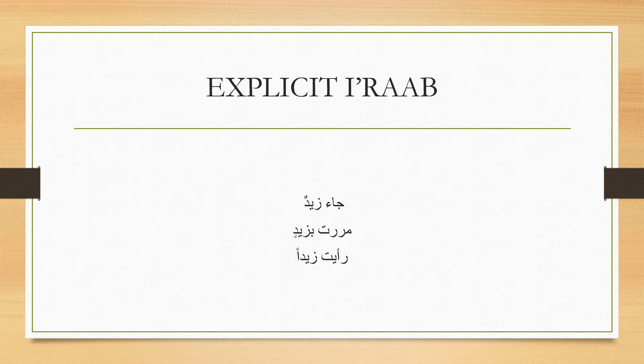In جاء زيدٌ, زيد is a فاعل and the فاعل is مرفوع, the sign of رفع being the ضمّة. In مررت بزيدٍ, زيد is an اسم مجرور due to the حرف جر, the primary sign being the كسر. In رأيت زيدًا, زيد is a مفعول به from the منصوبات, the primary sign being the فتح. This is an example of explicit إعراب.